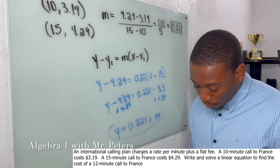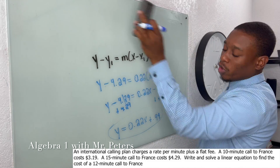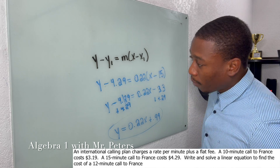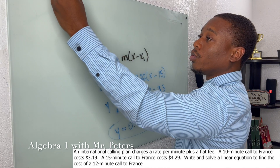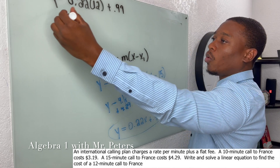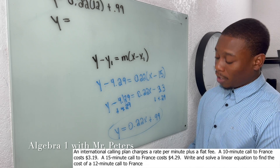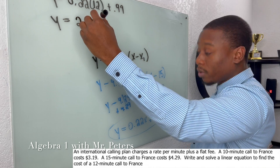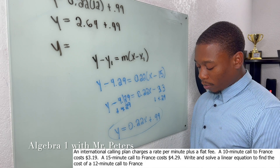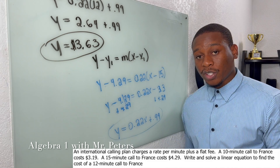We'll now use this equation to determine the cost of a 12-minute call to France. We plug in 12 for x: y = 0.22(12) + 0.99. That gives us y = 2.64 + 0.99. Our final answer is y = $3.63. That's how we solve an international call problem like this.